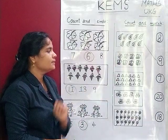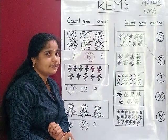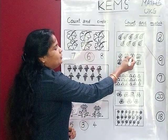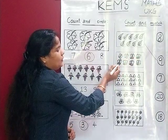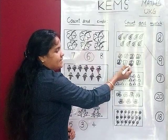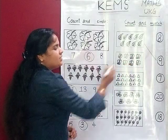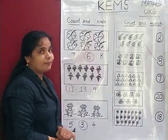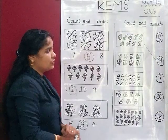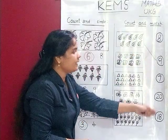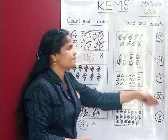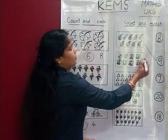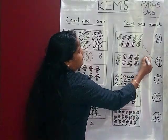Then how many butterflies are there? Let's count: 1, 2, 3, 4, 5, 6, 7 and 8. There are 8 butterflies. So we find the number 8. Yes, this is number 8. So let's match.